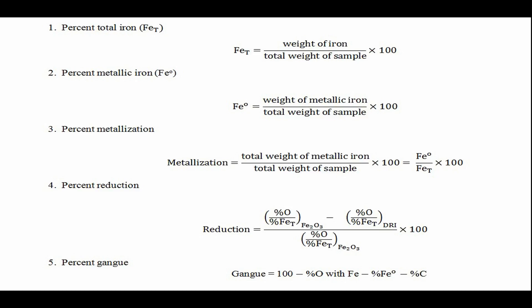Confusion can arise as some investigators define percent reduction in reference to the initial oxide state of the ore, which may include magnetite and wuestite. In that case, percent reduction defines the amount of reduction performed in the direct reduced iron processes.